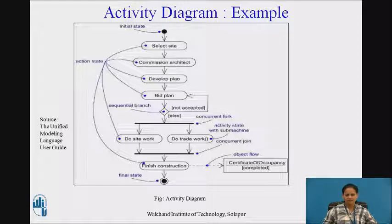and finally it reaches the final state where after this we have a house constructed for us and in between you can also watch the other details the various action states, concurrent folks, activity states with submachine, concurrent joints, object flows with the process named as certificate of occupancy which is received after completion of the construction process.